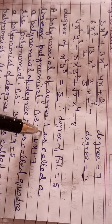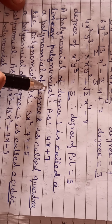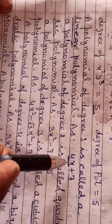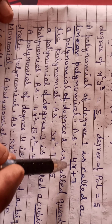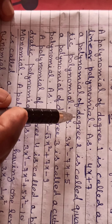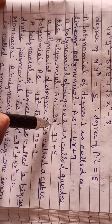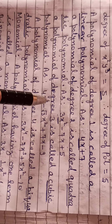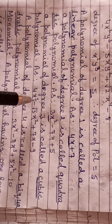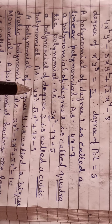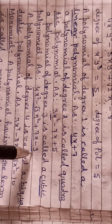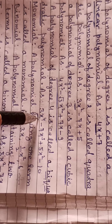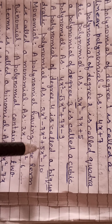A polynomial of degree 1 is called a linear polynomial — the power of x equals 1. A polynomial of degree 2 is called a quadratic polynomial — the power of x equals 2. A polynomial of degree 3 is called a cubic polynomial — the power of x equals 3. A polynomial of degree 4 is called a bi-quadratic polynomial — the power of x equals 4.